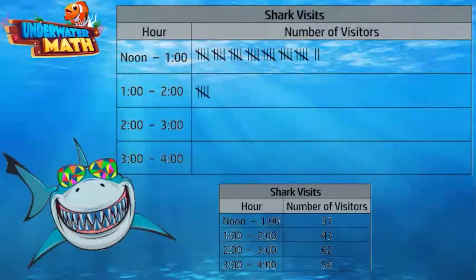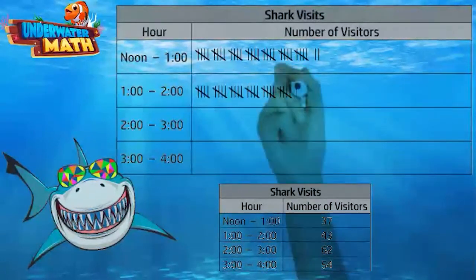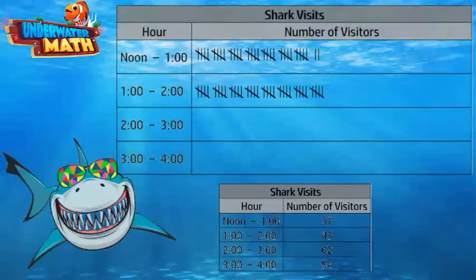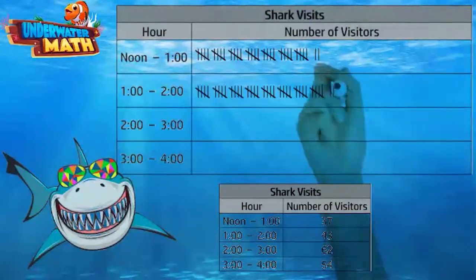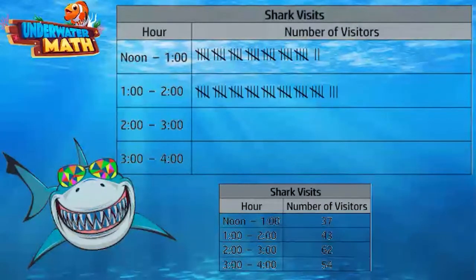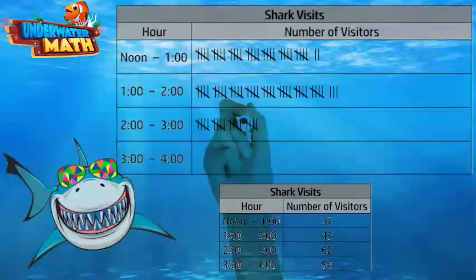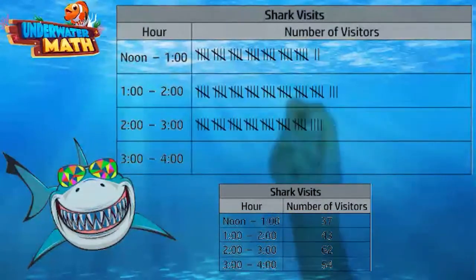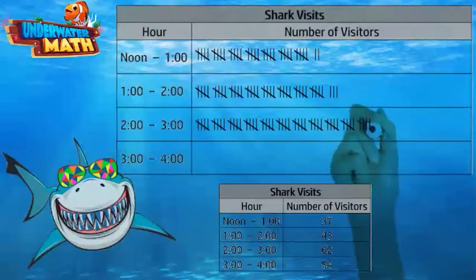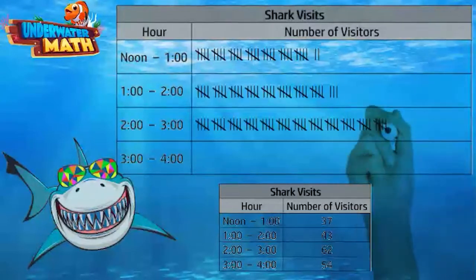At 2 o'clock there were 62 visitors. Let's count: 5, 10, 15, 20, 25, 30, 35, 40, 45, 50, 55, 60 bundles, and then 61, 62 single tallies.